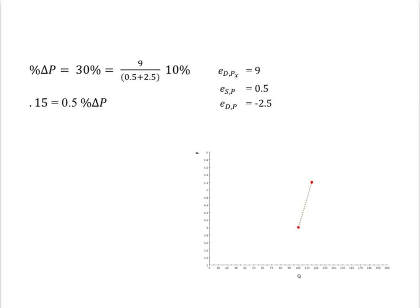If initially 100 units were being sold at $4, then the shift out in demand results in the equilibrium price rising by 30% of $4 or $1.20 for a new price of $5.20. Equilibrium quantity rises by 15% of 100 for a new level of 115 units.